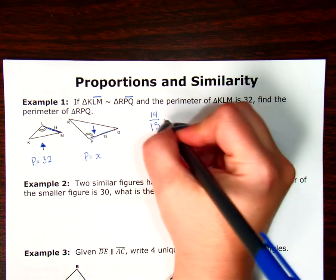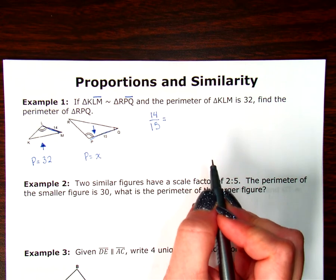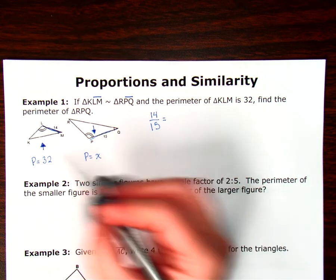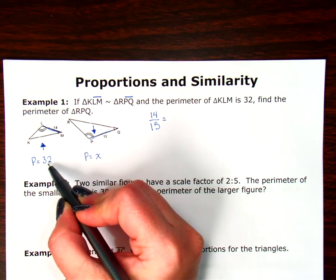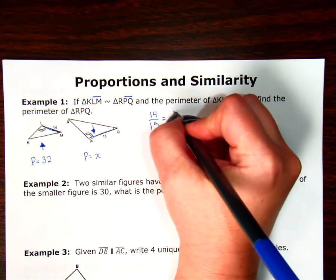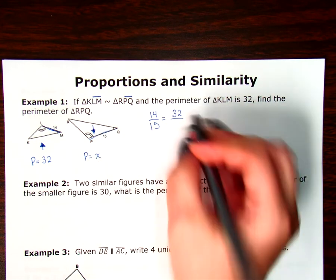Since that fraction doesn't reduce, I can leave it like that and then compare, set that equal to the comparison or the ratio of my perimeters. And again, I need to stay consistent with my up and my down. So my up arrow says in the top of my fraction should be my 32. And in the bottom of my fraction, my perimeter should be X.